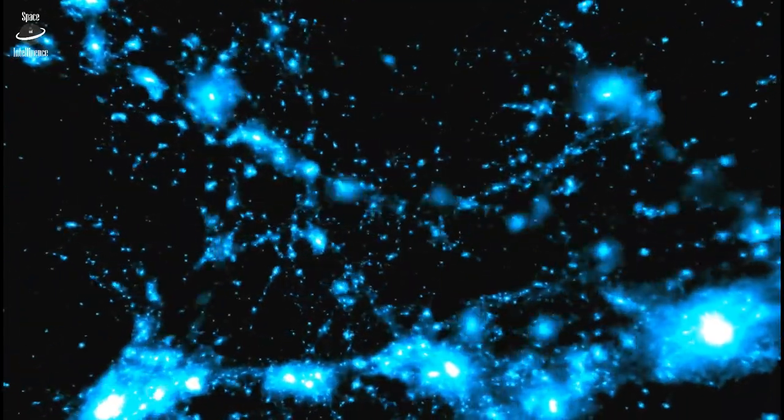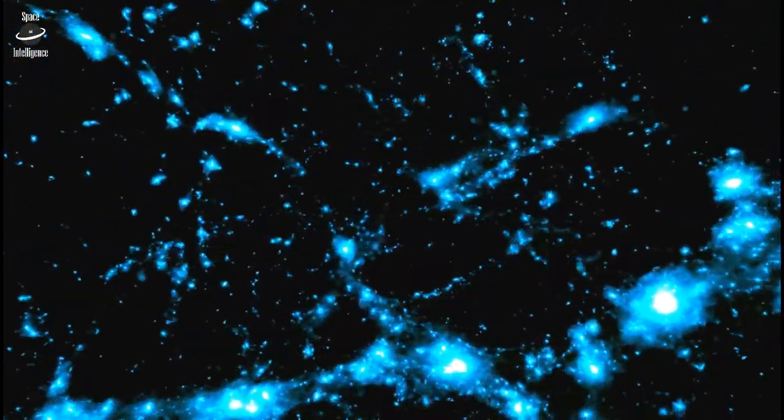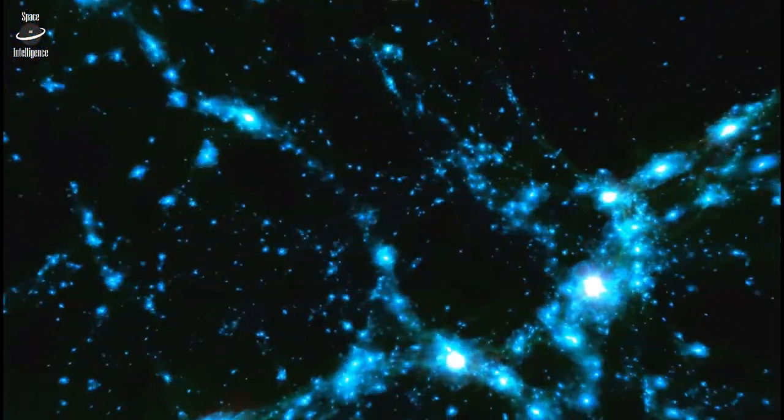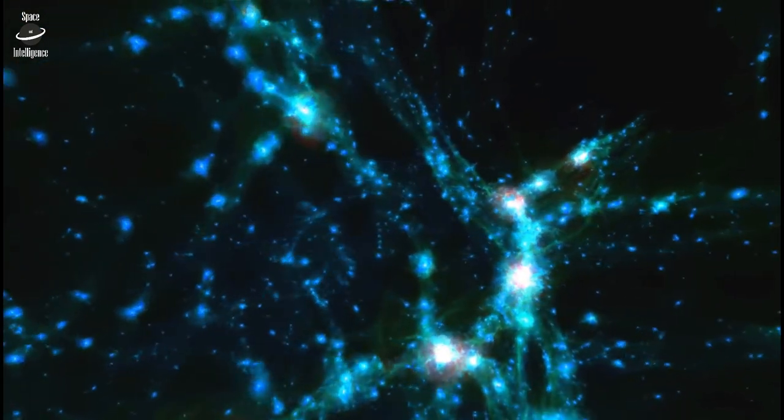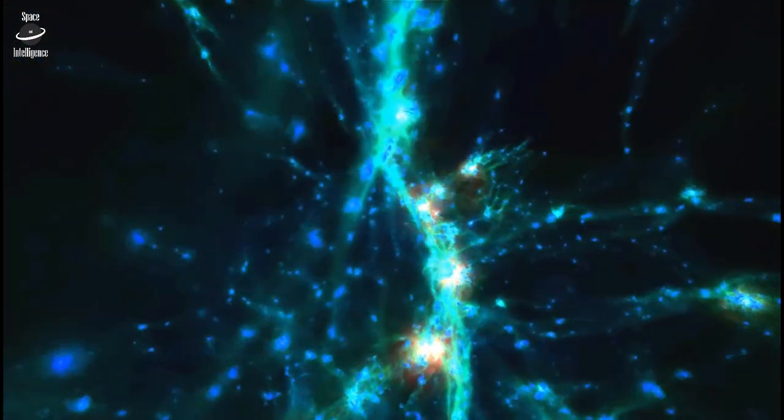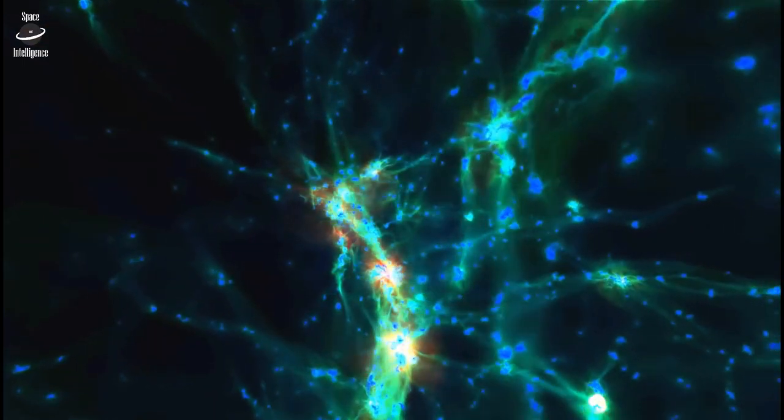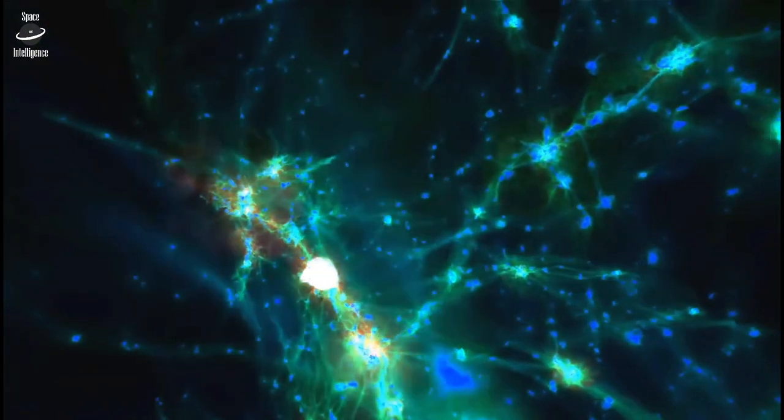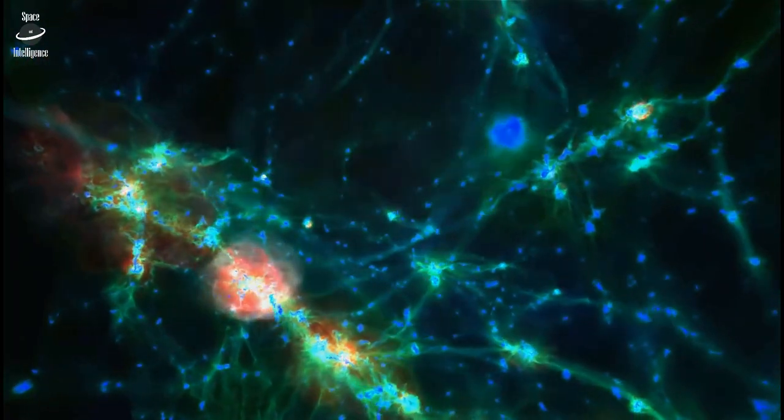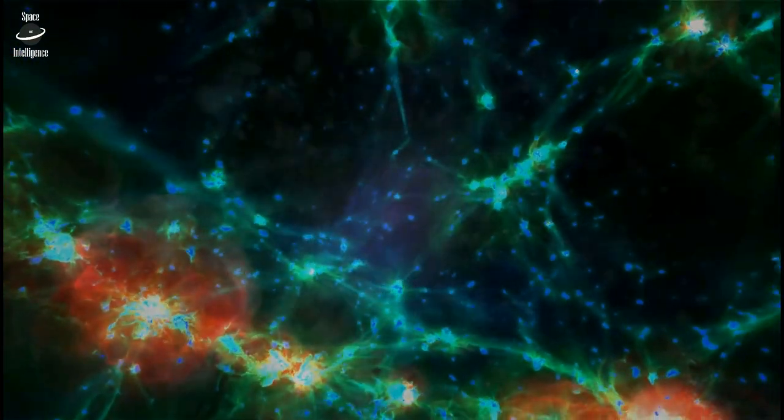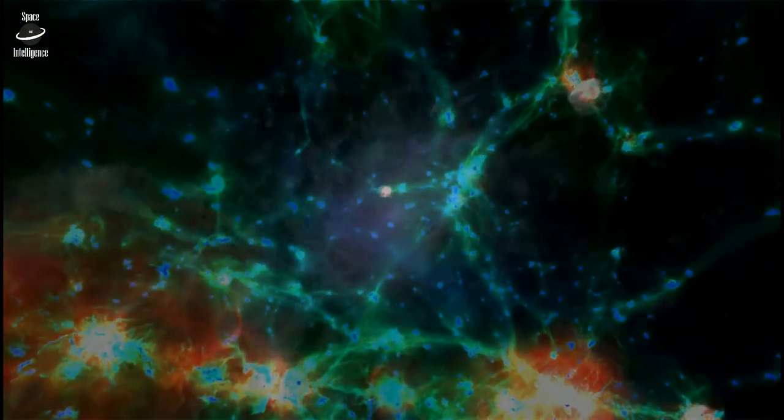We knew they had to be there because structure would not have formed without them. But nobody had any theory of where these initial non-uniformities at the level of one part in 100,000 might have come from. Inflation, it turns out, offers a very simple explanation for that, or rather a mind-boggling explanation, which is that it's all due to quantum physics.